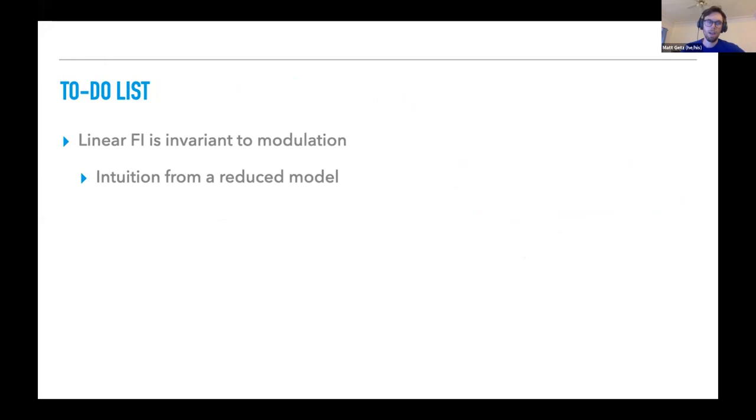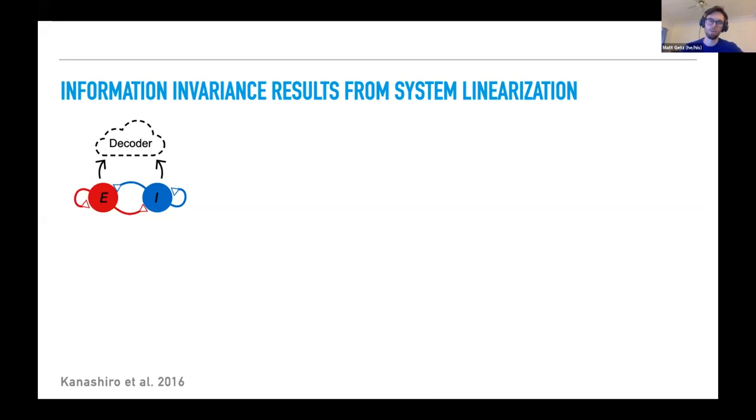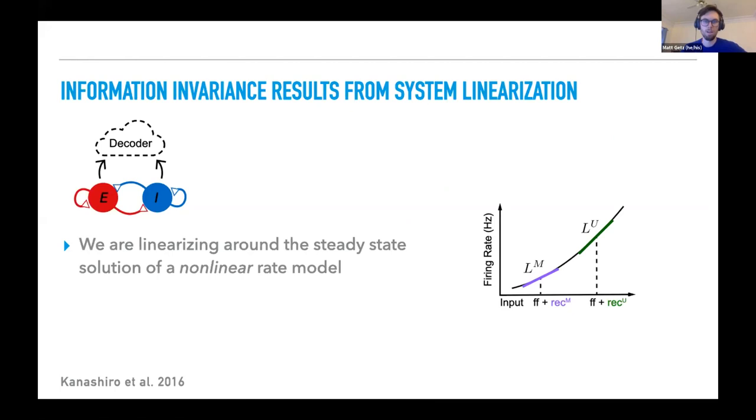So recall the definition of Fisher information we're using. Of course, these are the two metrics that factor into this equation. Of course, both are changing quite dramatically. And yet, Fisher information does not. It turns out that this is true in general. The first thing we want to do is understand why. To derive some intuition, we're going to go to a reduced model. We're just going to simplify the network down to a single EI pair.